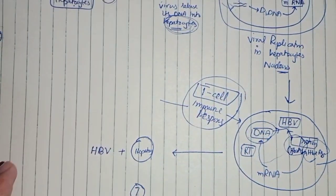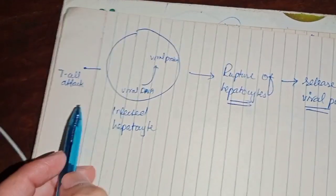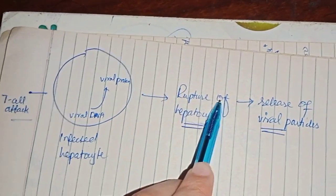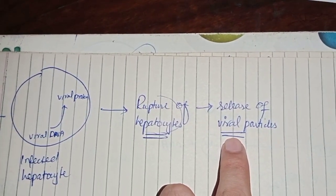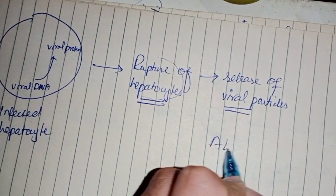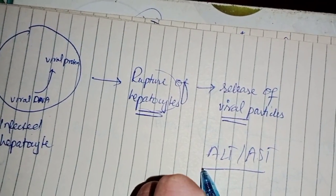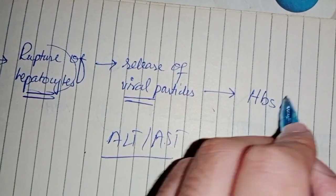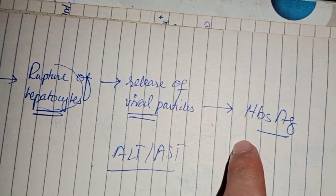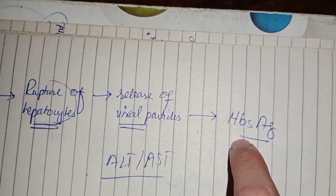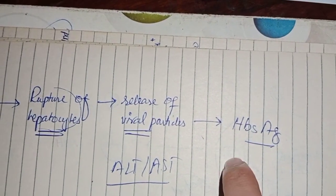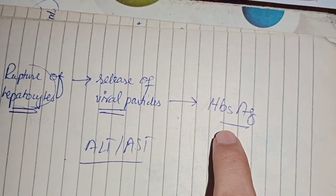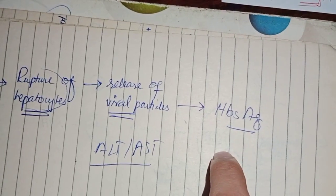Now let's discuss the serology. When T cells attack the hepatocytes in which the virus is being replicated, this results in rupture of the hepatocyte. When the hepatocyte ruptures, viral particles are released. Along with the viral particles, your ALT and AST — which are also present inside the cells — are also released due to damage to the hepatocytes. The first particle detected in your blood is hepatitis B surface antigen. There are no antibodies yet because antibodies develop only after the rising level of hepatitis B surface antigen.